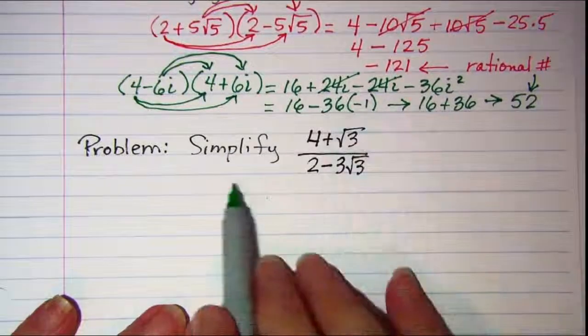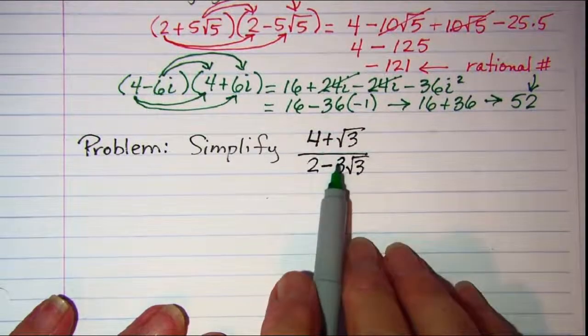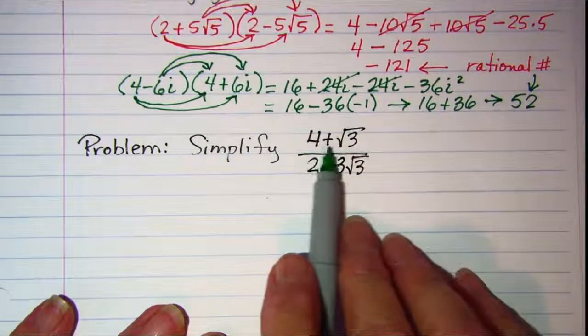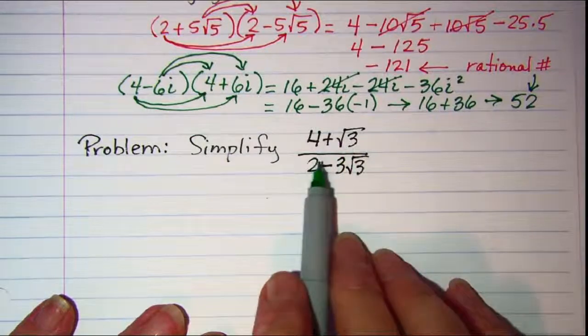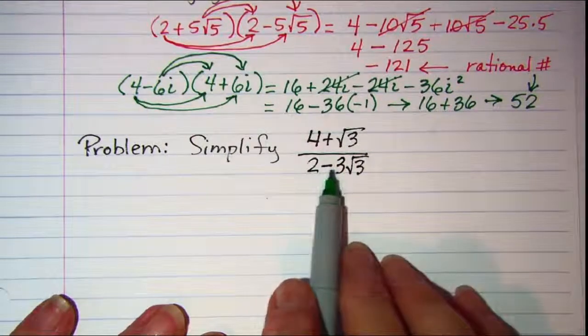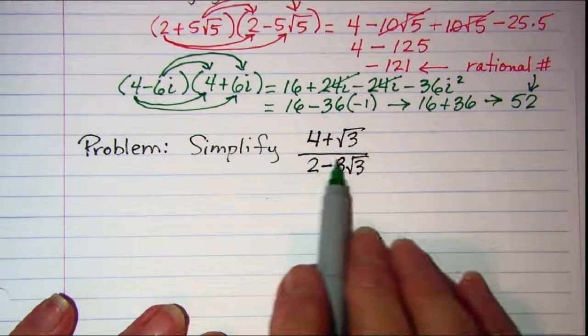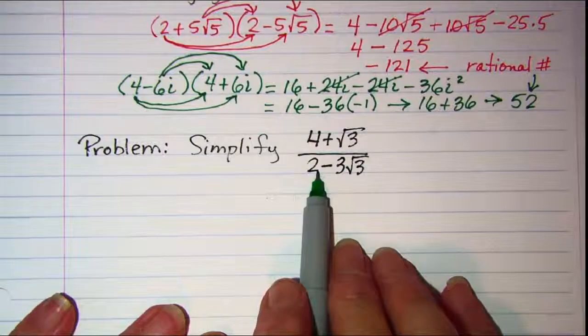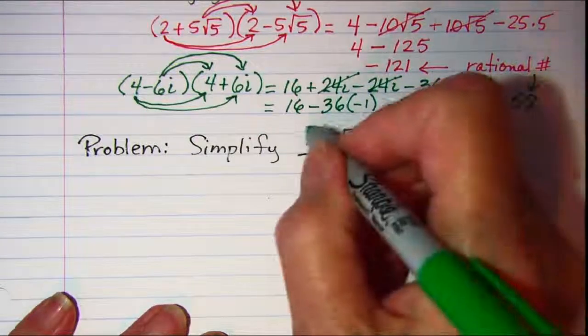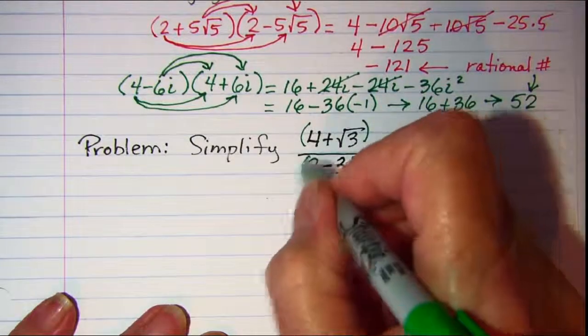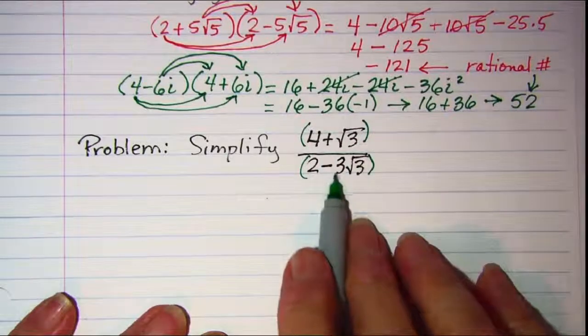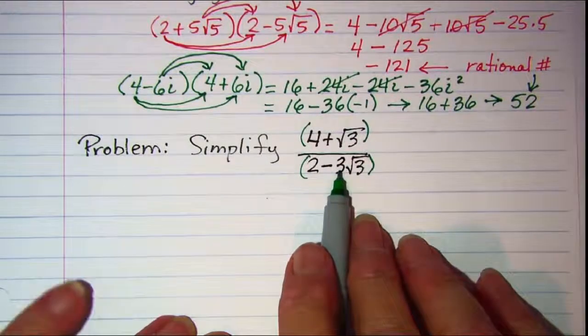We're asked to simplify this fraction. The numerator is 4 plus the square root of 3 and the denominator is 2 minus 3 root 3. So I have a binomial, two terms in the denominator.